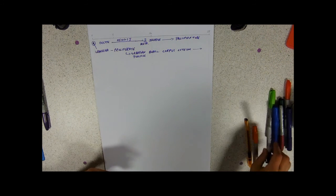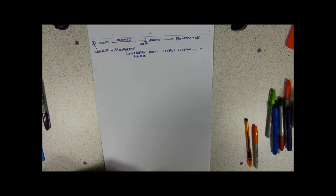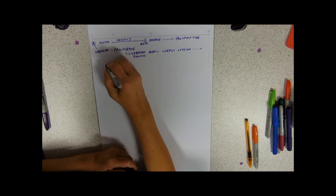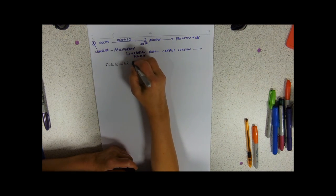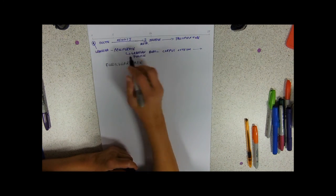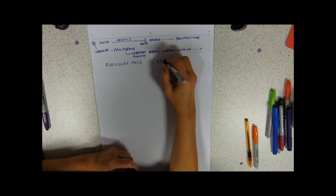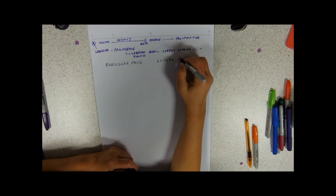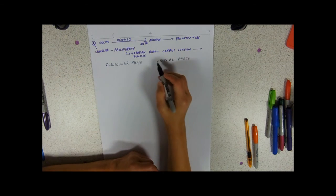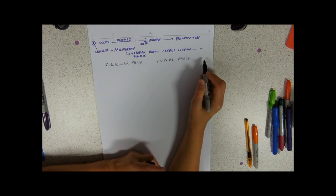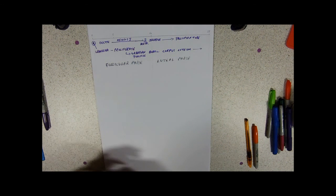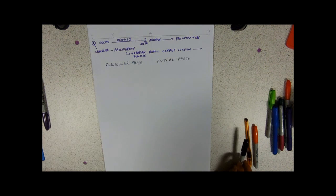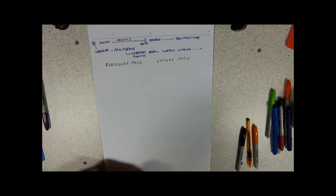Just before we move on to FSH, a couple of words that you'll see floating around is follicular phase - that means the follicles developing - and luteal phase, which is when the corpus luteum forms. Now this luteal phase is a fairly fixed 14 days, it doesn't seem to vary very much, but the follicular phase does.